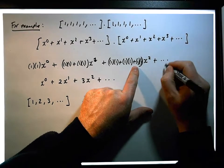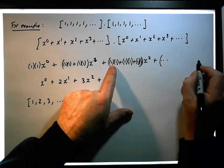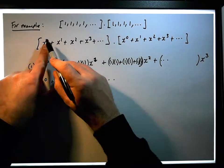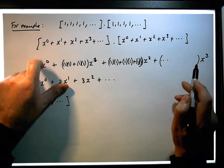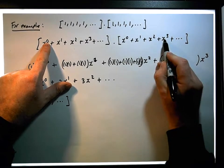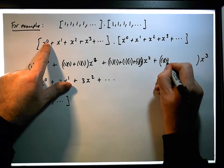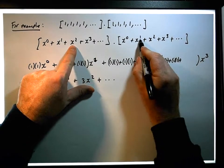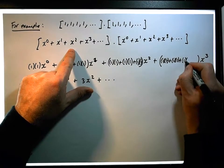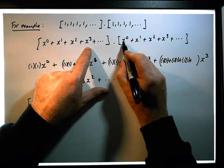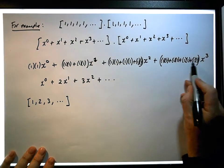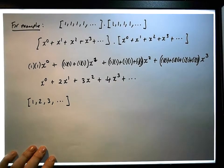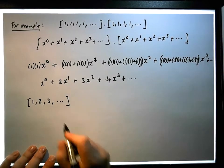You can see that the next term, the x^3 term, is going to have four terms in it, and the sum of the indices must add to give us 3. So it's the coefficient of x^0 times the coefficient of x^3, which is 1 times 1, plus the coefficient of x^1 times the coefficient of x^2, which is 1 times 1, plus the coefficient of x^2 times the coefficient of x^1, which is 1 times 1, plus the coefficient of x^3 times the coefficient of x^0, which is 1 times 1. So 1 plus 1 plus 1 plus 1 gives us 4x cubed, plus dot dot dot.